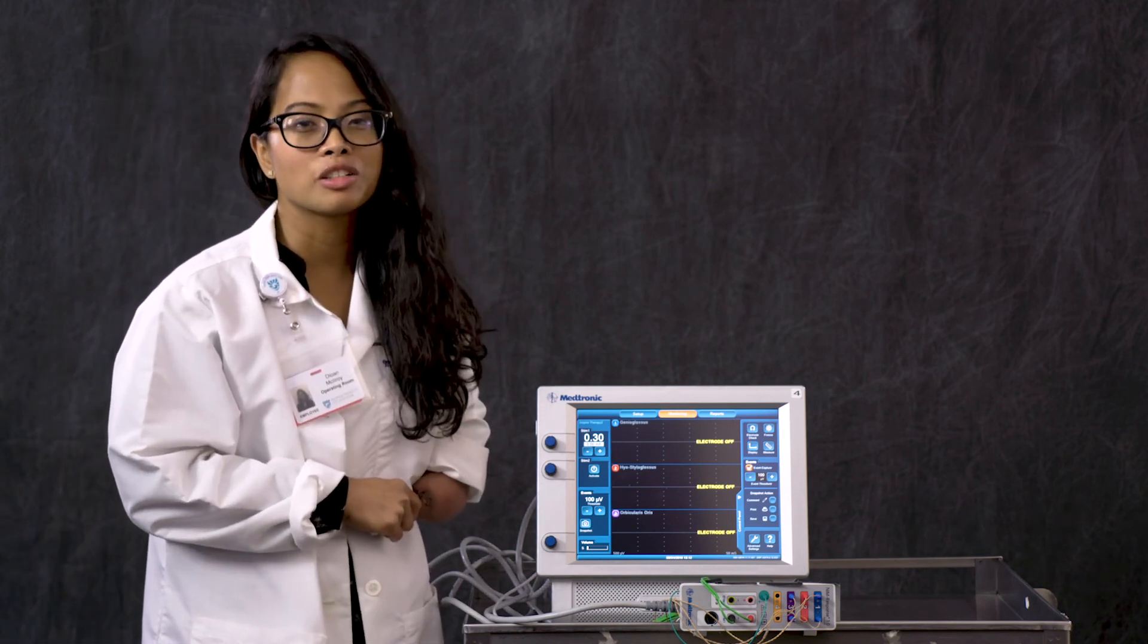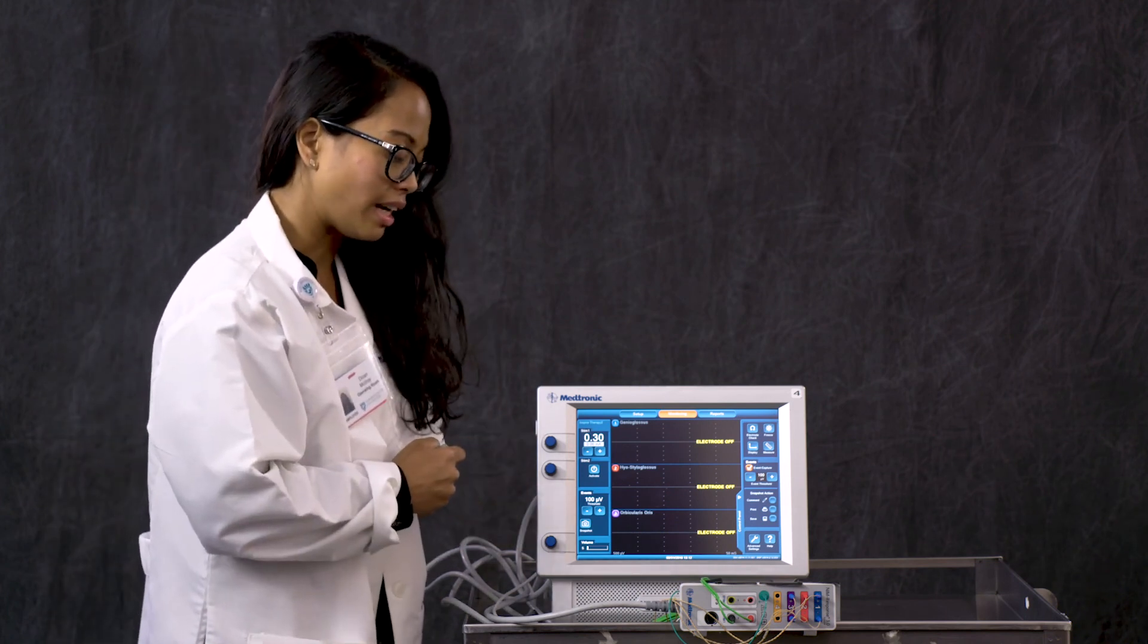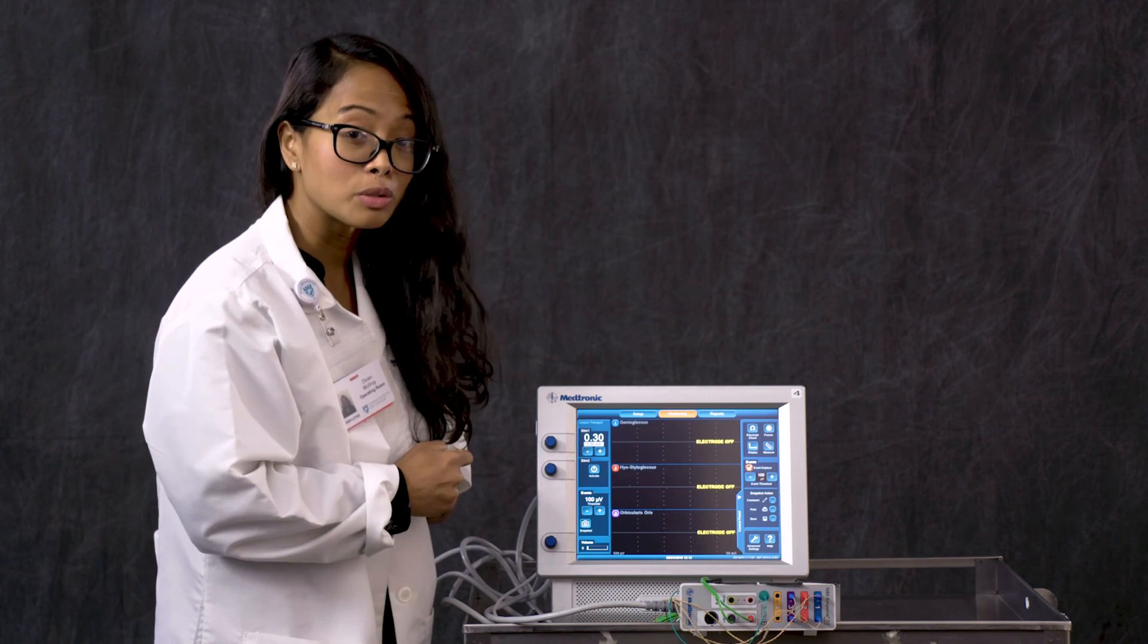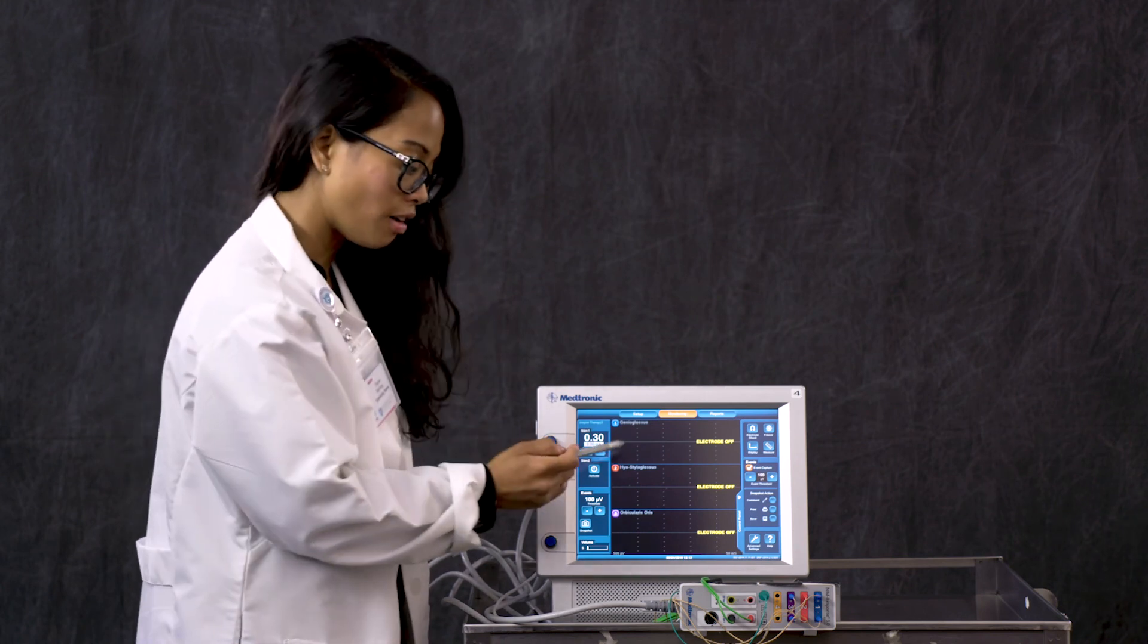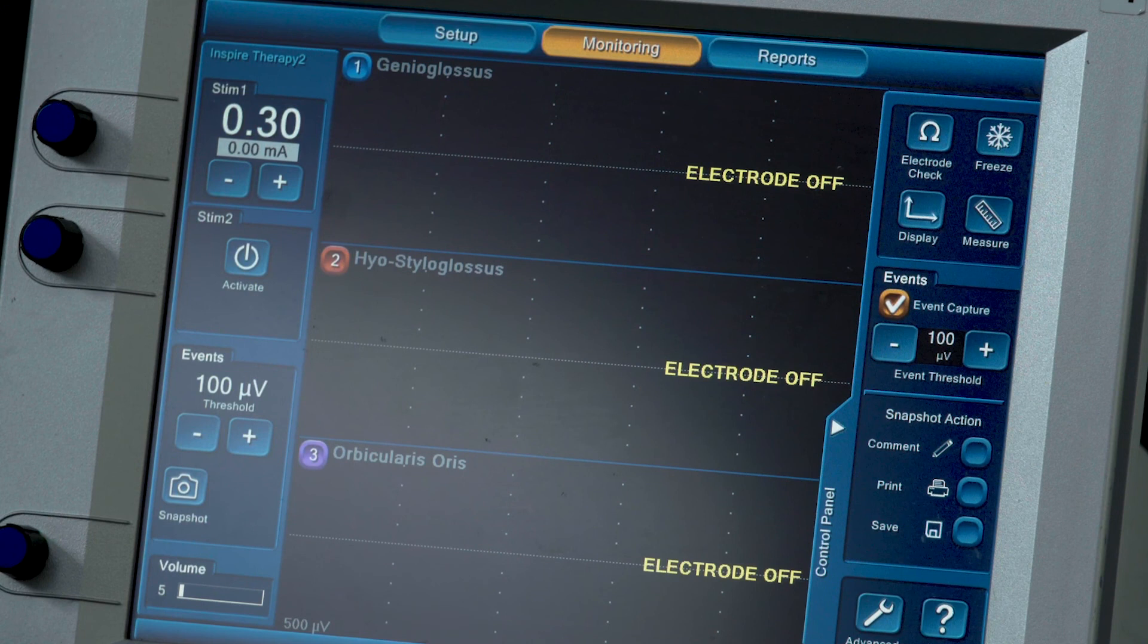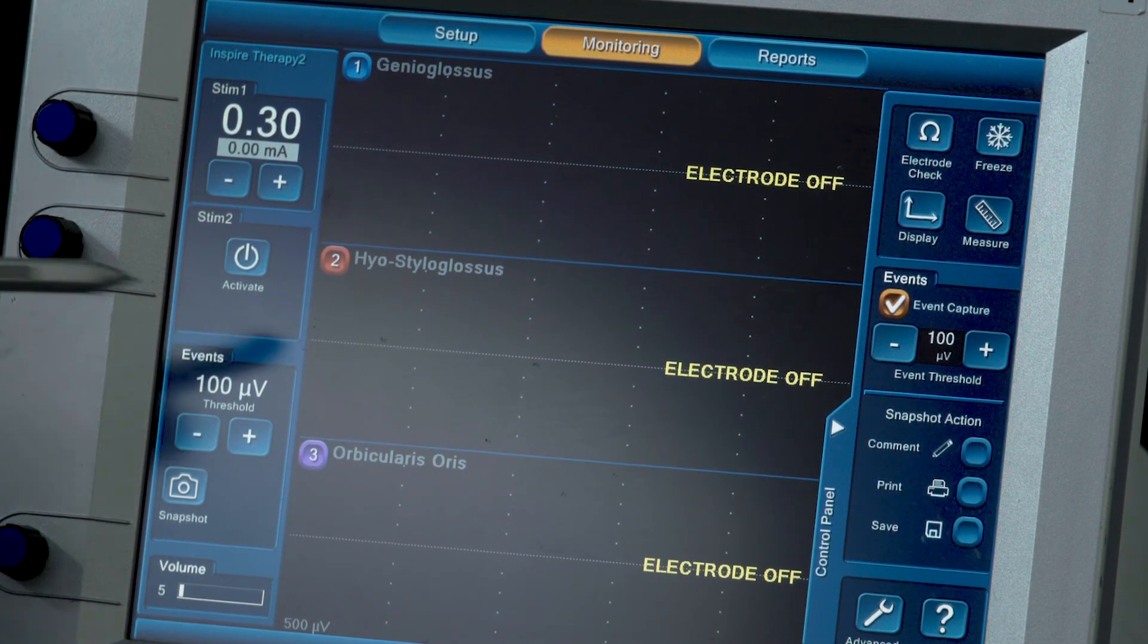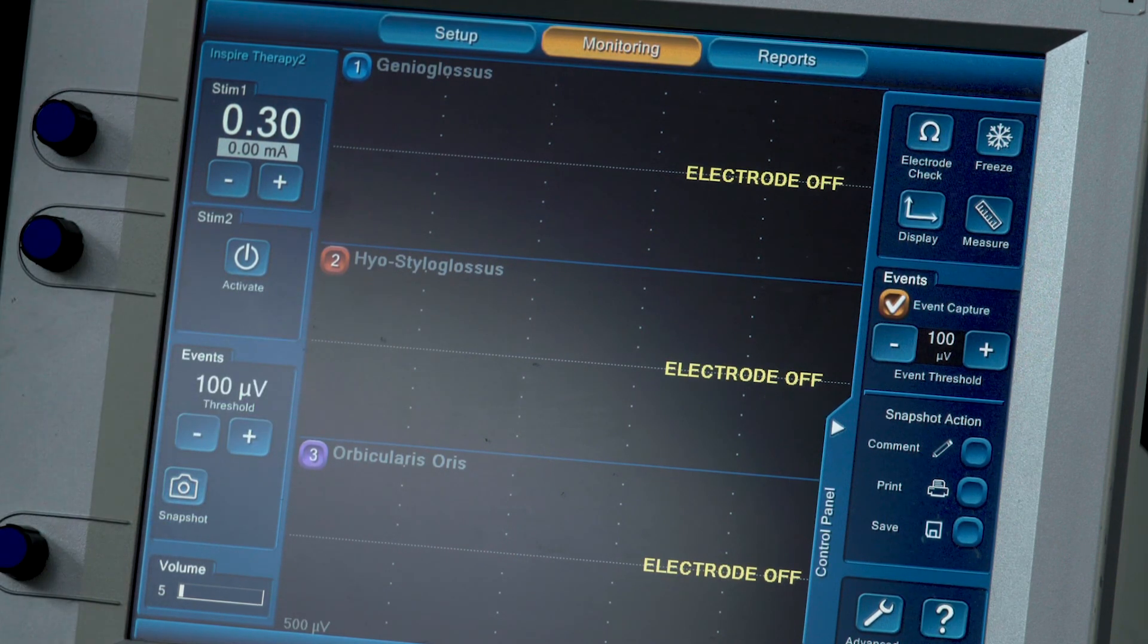So here we are on our main monitoring screen. When we are actually in surgery intraoperatively, what we are looking for, as we have our three channels here, we want to see the most EMG activity or electromyographical activity on our genioglossus branch, which identifies the inclusion branches, and minimal activity on our hyostyloglossus channel, which are our exclusion branches.